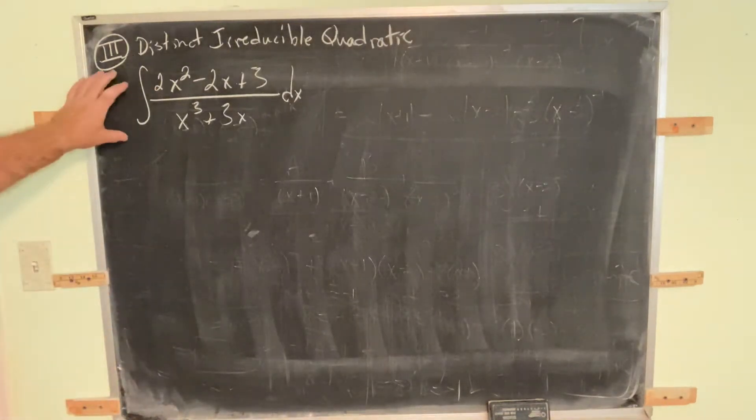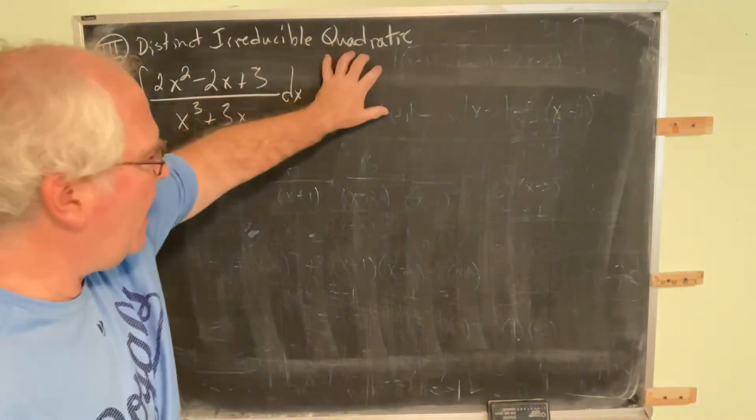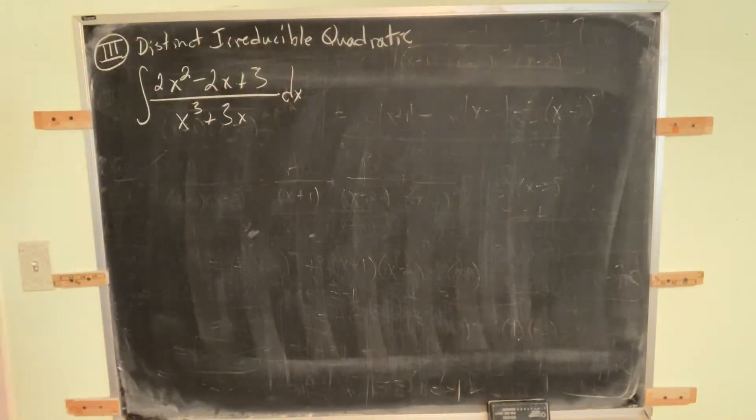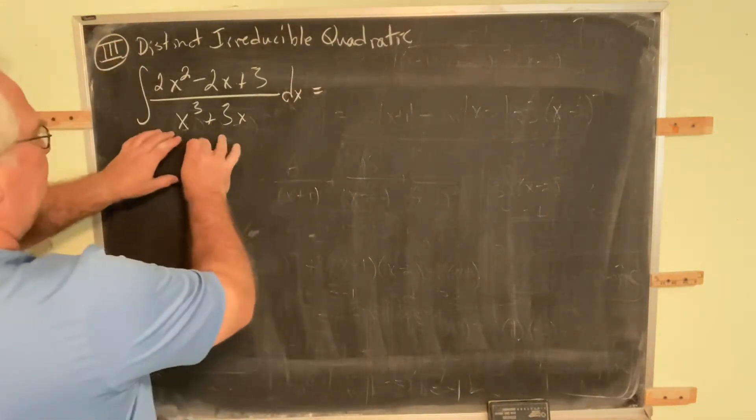Our first example in Category 3. This is distinct, irreducible, quadratic. Now the thing is, we don't know what category we're in until you get this thing factored.